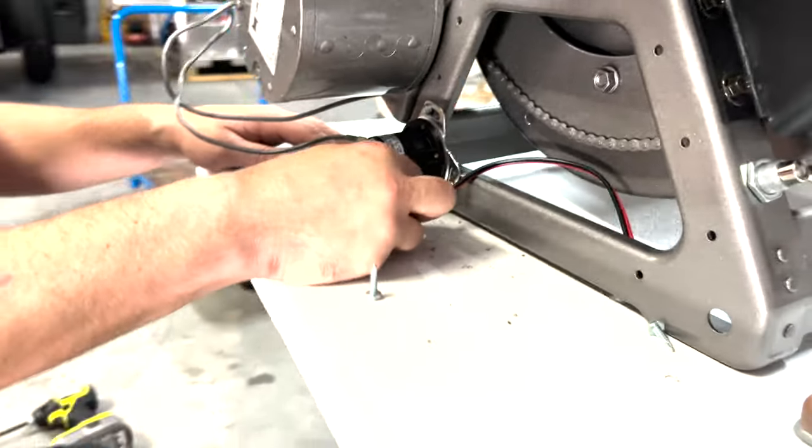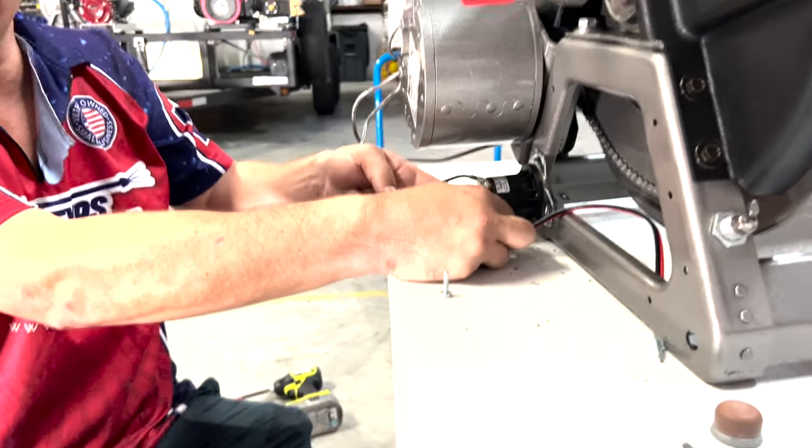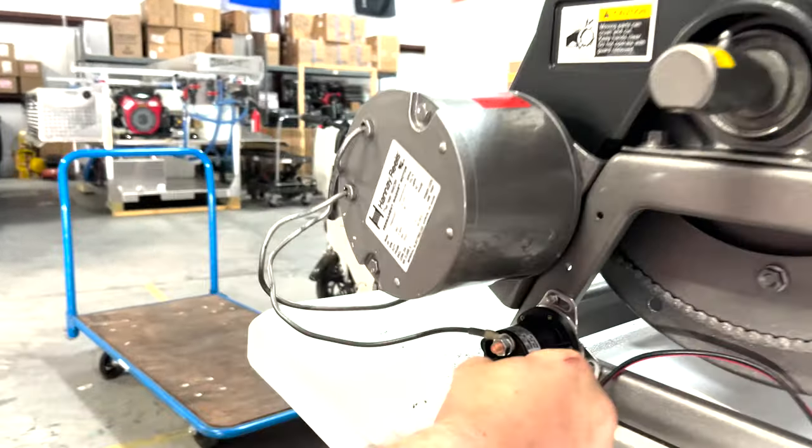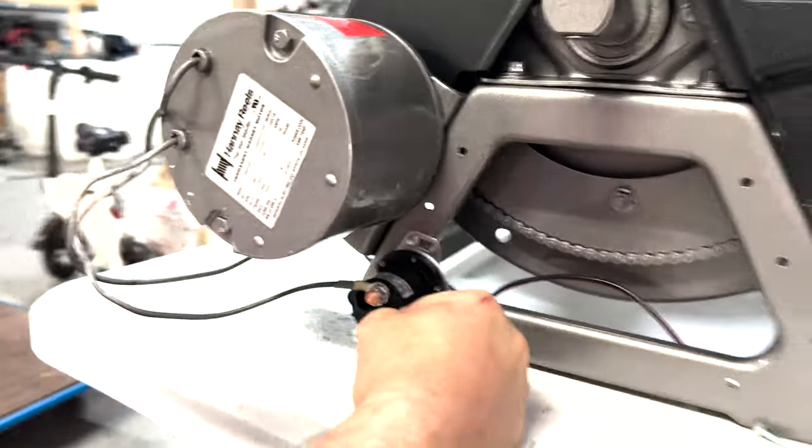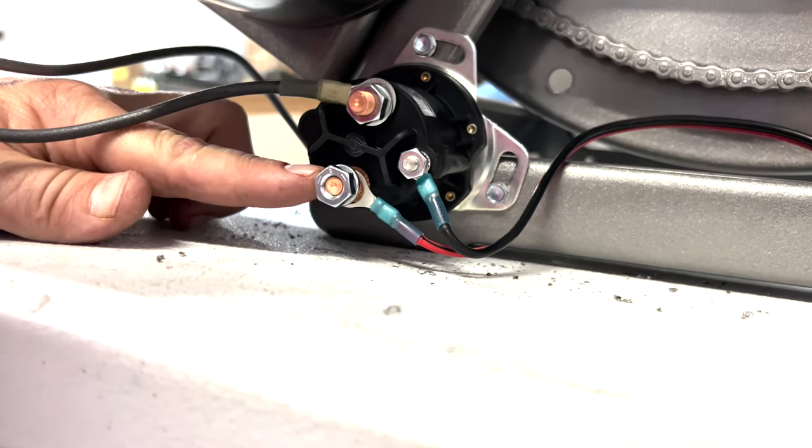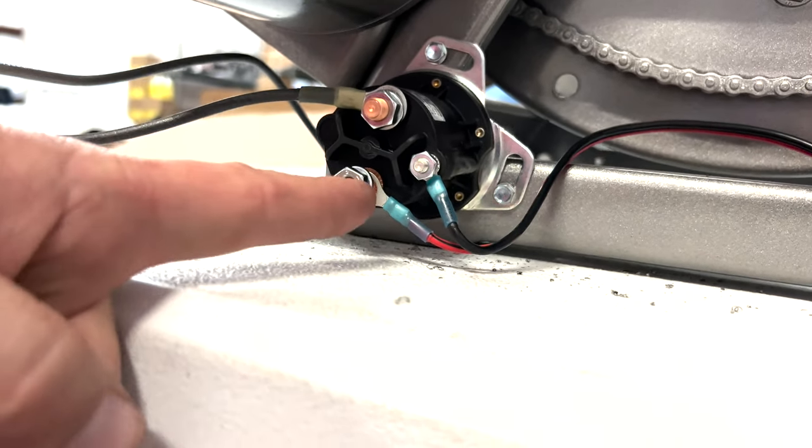For the other end, our positive will go to the large lug on the bottom, and our negative will go to the center post. So, positive to the large lug on the bottom and negative to the center post.